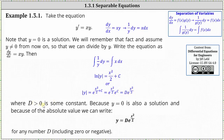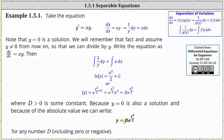Where d is greater than zero as some constant. However, because y equals zero is also a solution and because of the absolute value around the y, we can drop the absolute value and write the general solution as y equals d times e to the power of x squared divided by two for any number d, including zero or negative. Notice we don't have to list y equals zero as a separate solution because when d is zero, we do have y equals zero.